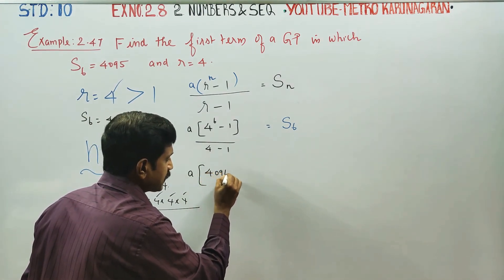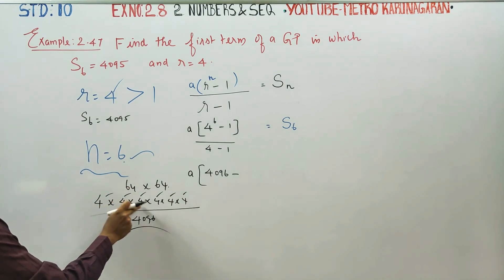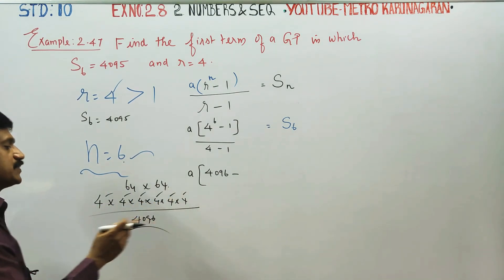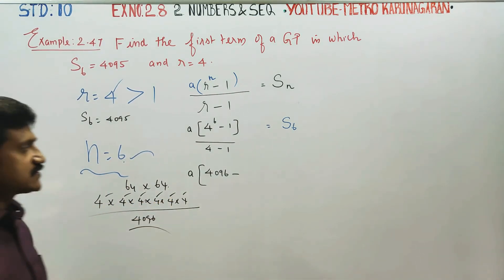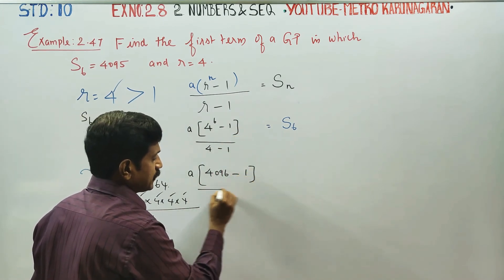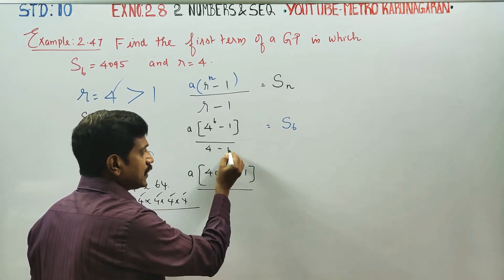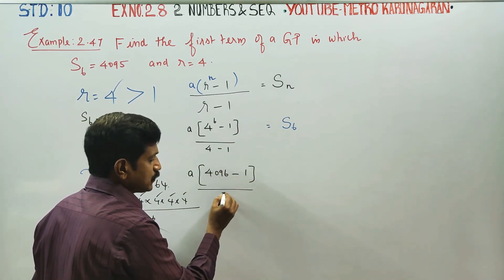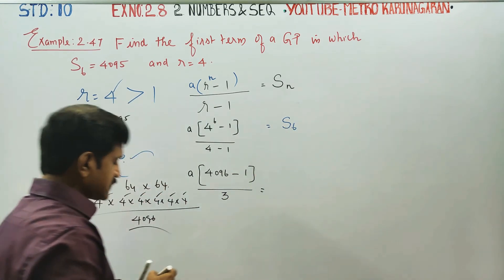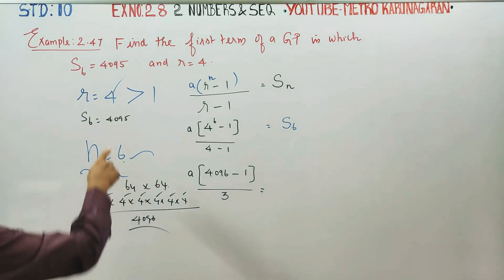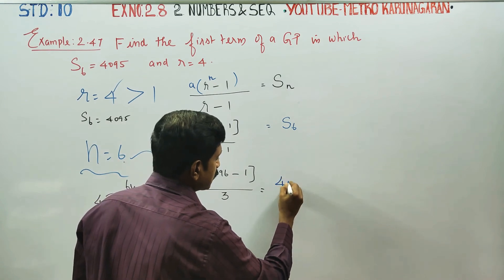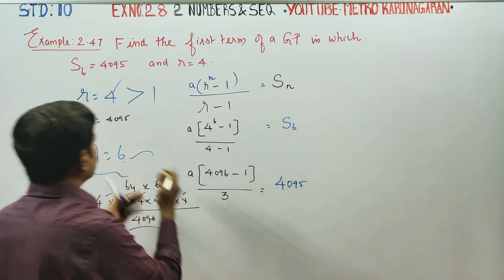We check R. 4096 minus 1, divided by 4 minus 1, which is 3. So we get S6 equals 4095. S6 is 4095. That checks out.